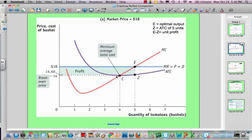You'll notice that the break-even price is still $14, but the profit is E minus Z times the quantity output here. So it is E minus Z times five.